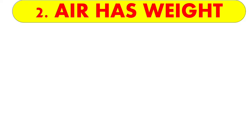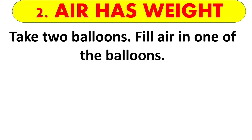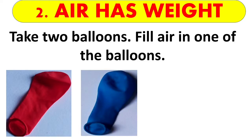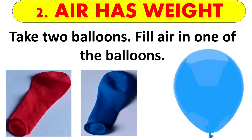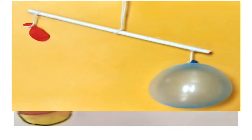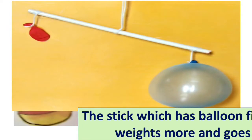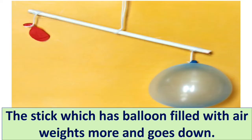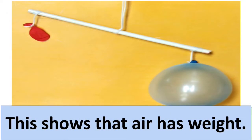The second property of AIR is AIR has weight. Let us see the activity. Take two balloons — one red balloon and one blue balloon — and fill air only in the blue balloon. Now hang both balloons on two ends of a stake, and hang the stake from the center with a thread. What do you notice? Yes, the stake with the balloon filled with air — the blue balloon — weighs more and goes down. This shows that AIR has weight.